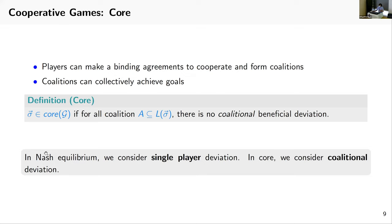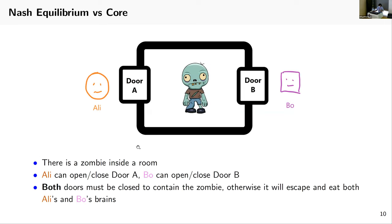In cooperative games, we have another solution concept that defines stability called core. In cooperative games, players can make agreements to cooperate and form coalitions to achieve some goal. σ is a core if for every coalition—a subset of losing players under σ—there exists no coalition with beneficial deviation. Recall that in Nash equilibrium we consider only single player deviation, but in core we consider coalition deviation. To illustrate this difference, suppose we have a zombie inside a room.